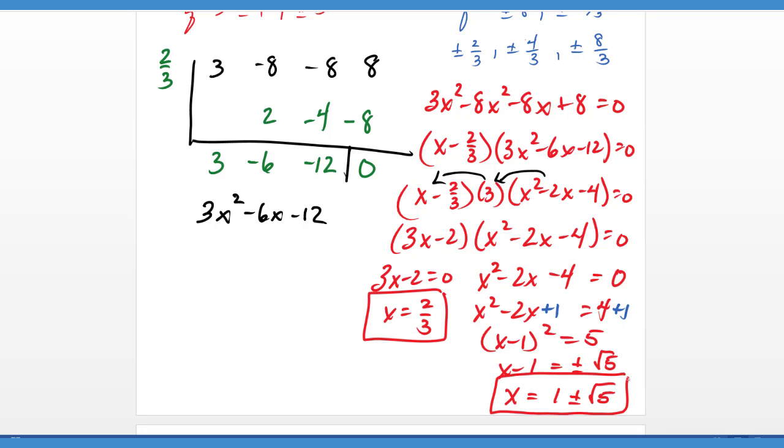Okay, and so what you can see here is that x equals 1 plus or minus the square root of 5 gives us two irrational roots along with our rational root.